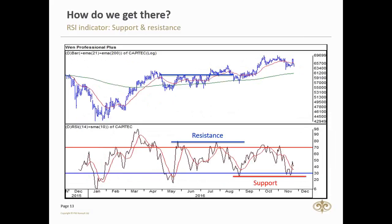Support and resistance levels. The RSI indicator shows, sometimes more clearly, the price levels of support and resistance. We can see this by the blue line at the top or the red line at the bottom.